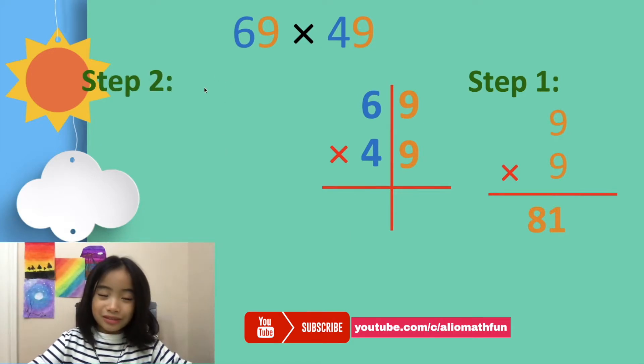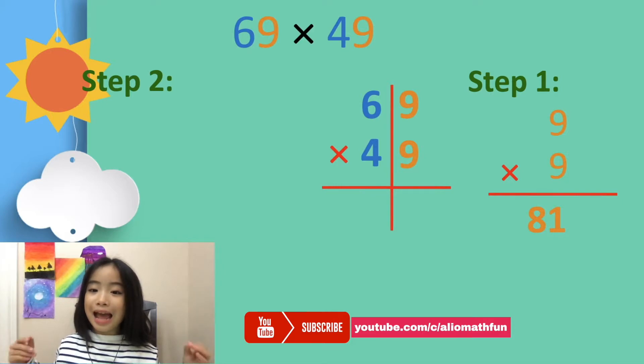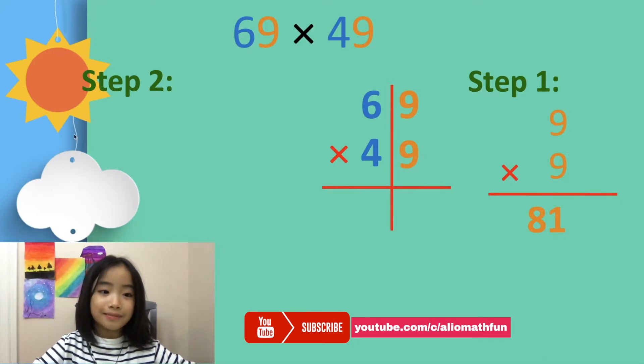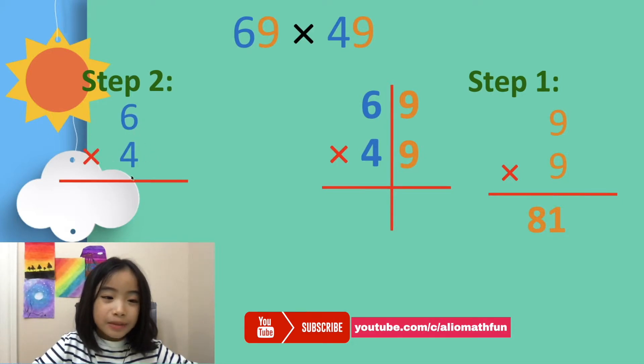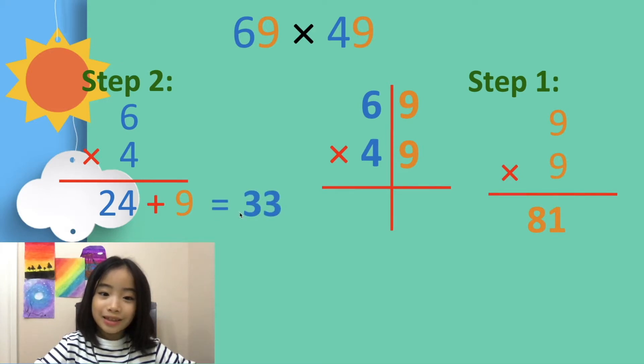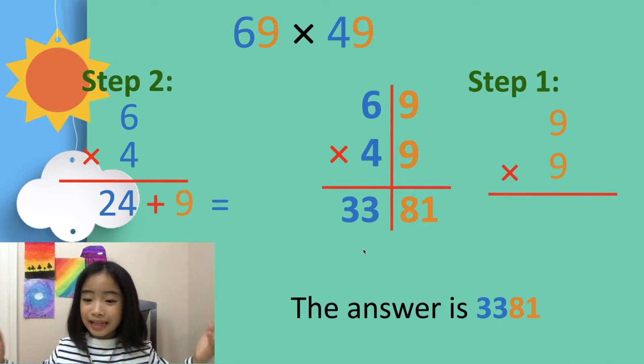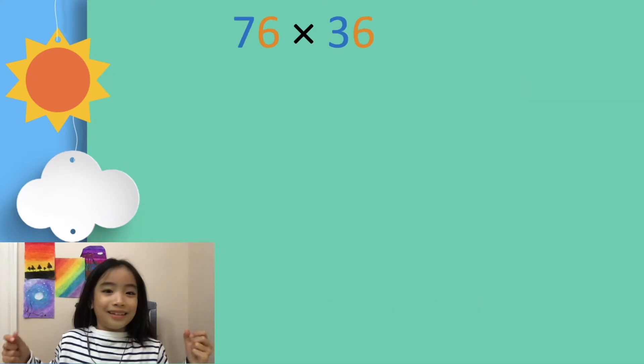Step 2: Multiply the tens digit, then add the ones digit. So 6 times 4 equals 24. 24 plus 9 equals 33. We put the 81 on the right side and the 33 on the left side. So the answer is 3,381.